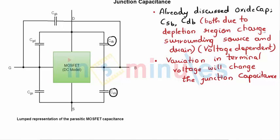In the previous clip we already studied oxide capacitance. In this clip we are going to study junction capacitance — the two junction capacitances left for us to study are drain-to-bulk and source-to-bulk, or drain-to-body and source-to-body.